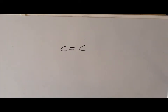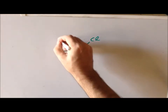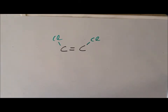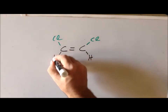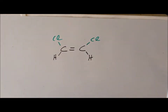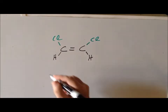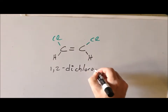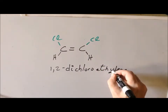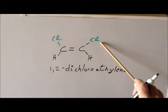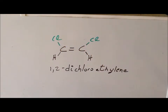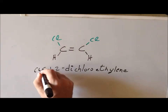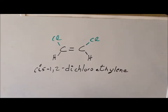There are two more disubstituted chloroethylene isomers. The next has chlorine at the one and two positions — 1,2-dichloroethylene. Since both chlorine substituents are on the same side of the carbon-carbon double bond, this is the cis isomer: cis-1,2-dichloroethylene.